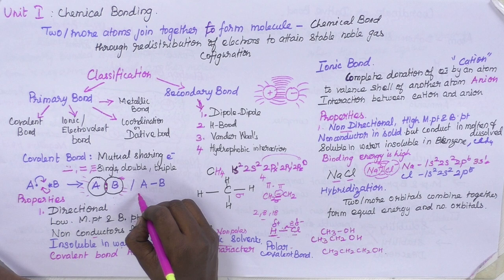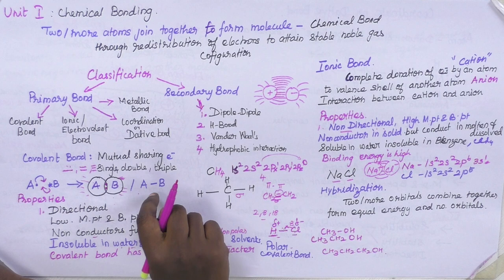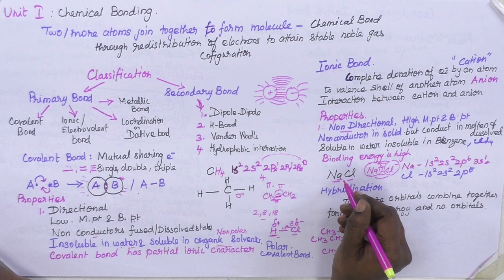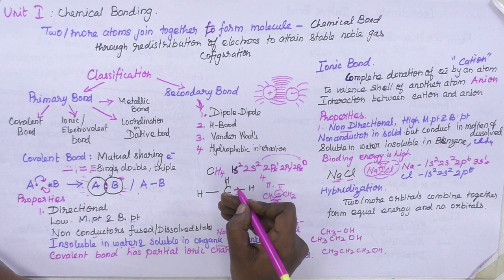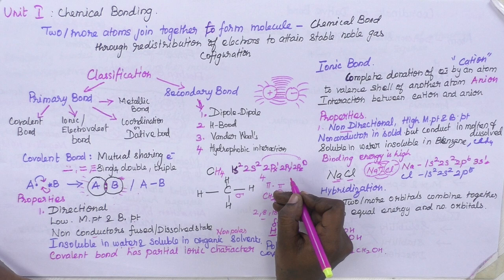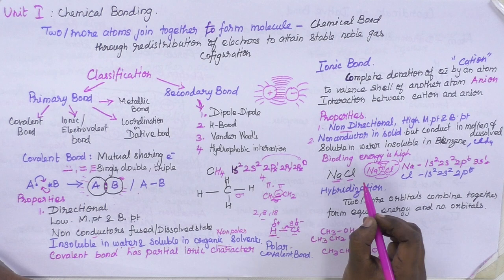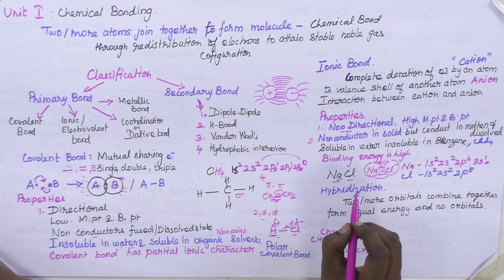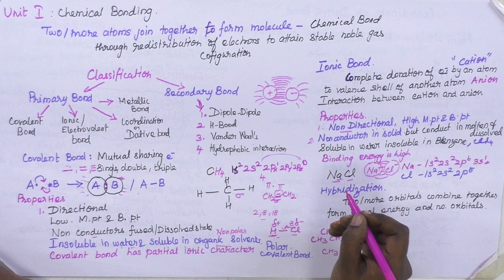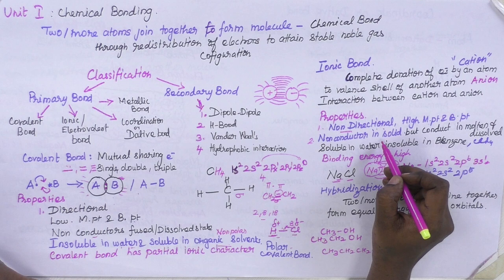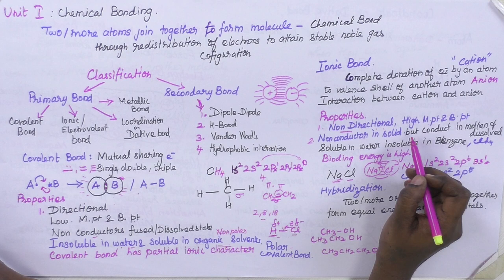The second important property is conduction. NaCl in the solid state will not conduct electricity. But if you melt NaCl into a fused state or dissolve NaCl in water, it shows electrical conductivity. So ionic compounds conduct electricity in the molten and solution state.